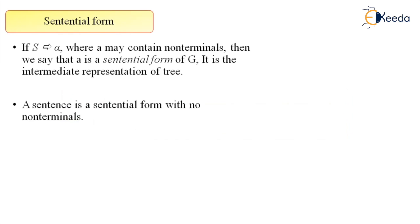Welcome here and the next topic we are discussing is the sentential form. The definition is given as S derives alpha. S derives A, where A may contain non-terminals. Then we say that A is the sentential form of G. It is the intermediate representation of tree.